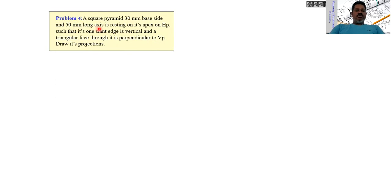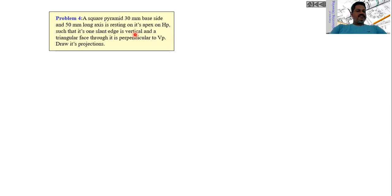The height of the pyramid is 50 mm. It is resting in such a way that its apex is lying on the horizontal plane. One slant edge is vertical, and one of the triangular faces is perpendicular to the vertical plane. These are the two conditions given in the problem.